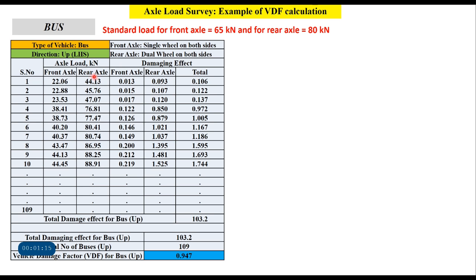For example, 22.06 divided by 65 to the power 4 equals 0.013, and 44.13 divided by 80 to the power 4 equals 0.093. As long as the rear axle load is less than 80 kN, the damage effect will be less than 1; if it is more than 80, the damage effect will be more than 1. So for a load of 88.25 kN, the damage factor is 1.481 — that is (88.25 / 80)^4. And (44.13 / 65)^4 equals 0.212. We similarly calculate the damage effect for each axle.